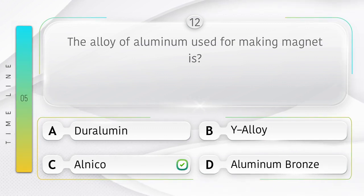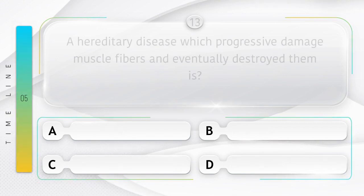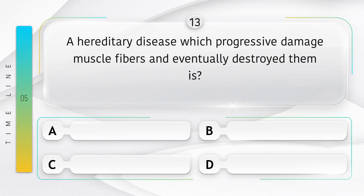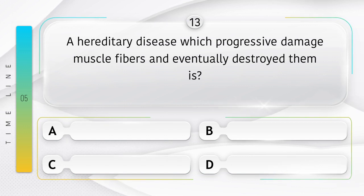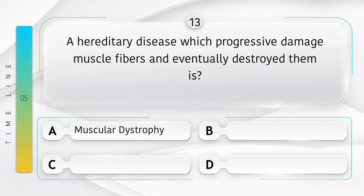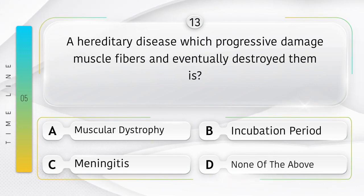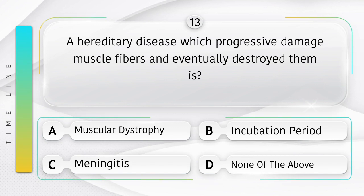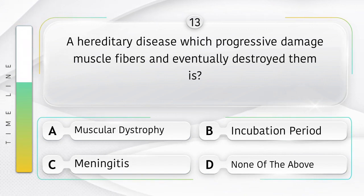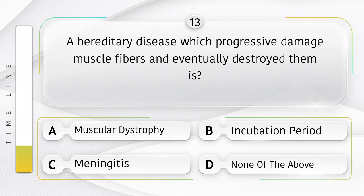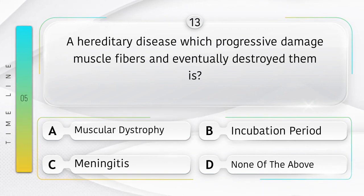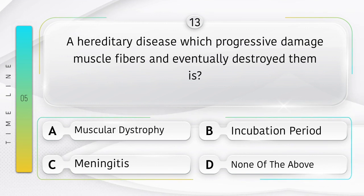A hereditary disease which progressively damages muscle fibers and eventually destroys them is: option A: Muscular Dystrophy, B: Incubation Period, C: Meningitis, D: None of the above. We don't know the answer — if you know, please comment the answer in the comment box.